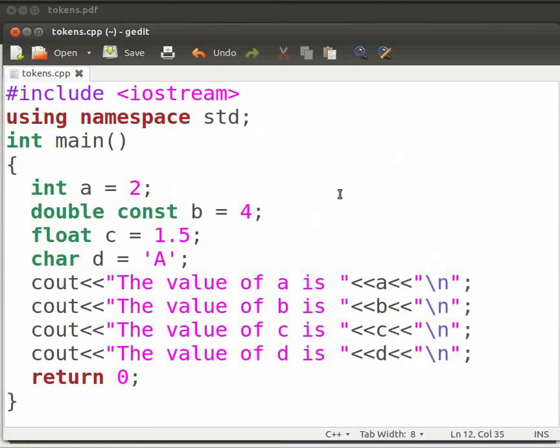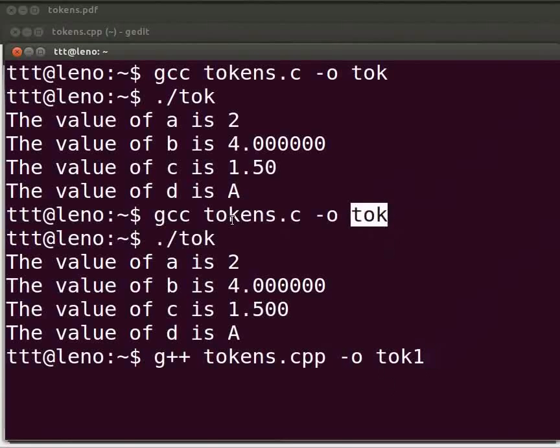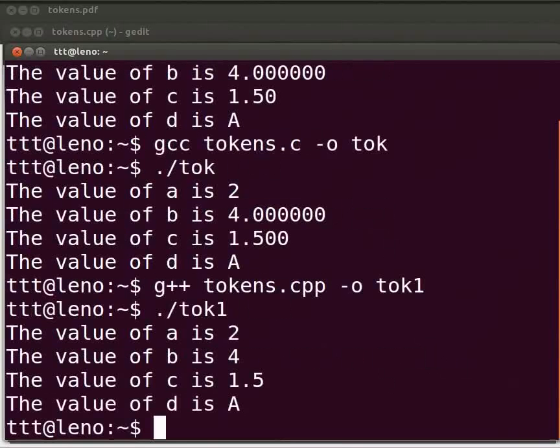Let us execute the program. Come back to our terminal. To compile type g++ tokens.cpp -o tok1. Here we have tok1 because we don't want to overwrite the output parameter tok for the file tokens.c. Now press enter. To execute type ./tok1. Press enter. The output is displayed.